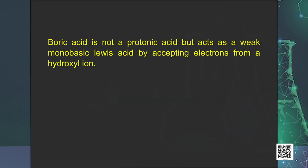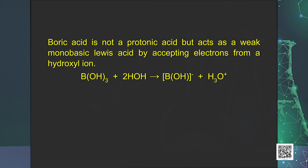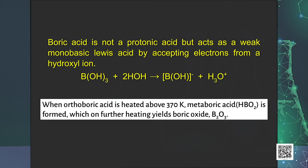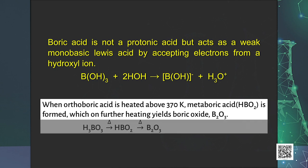Boric acid is not a protonic acid but acts as a weak monobasic Lewis acid by accepting electrons from a hydroxyl ion. When orthoboric acid reacts with water it produces tetrahydroxyborate ion along with hydronium ion. When orthoboric acid is heated above 370 K, metaboric acid is formed, which on further heating yields boric oxide.